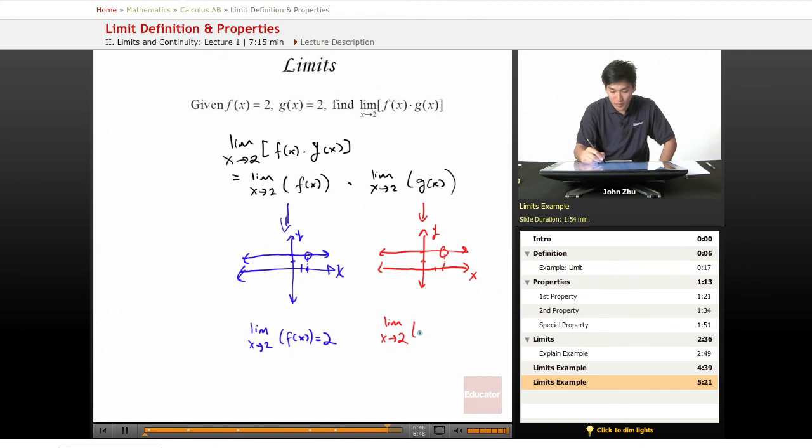So limit of x approaches 2, f(x) equals g of x, I'm sorry, g(x) equals 2. So then finally, we get that limit equals 2 times 2, which is 4.